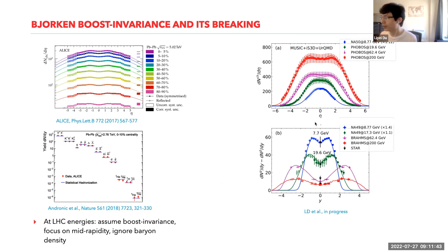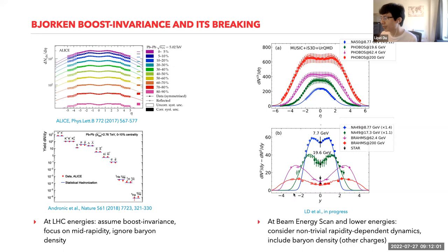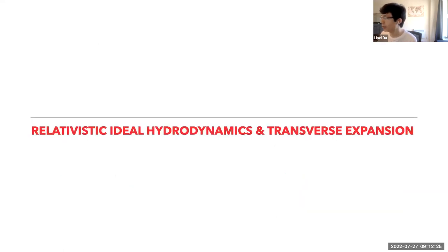However, at low beam energies this is not the case. The charged particle distribution and net proton distribution at the beam energy scan show very non-trivial rapidity-dependent distributions. The proton number is much larger than the anti-proton number, meaning we have a non-zero net baryon density. We need to include non-trivial rapidity-dependent dynamics and consider the evolution of net baryon density at low beam energies.